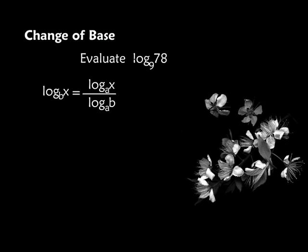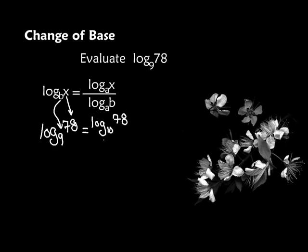Let's use the change of base formula to evaluate log base 9 of 78. Until you get really good at it, I would write the formula out and what we're trying to evaluate. So I'm going to write log base 9 of 78 right underneath my formula, so I can see that b is 9 and x is 78. To put it in our calculator, our base has to be 10, so we write log base 10 of 78 divided by log base 10 of 9. We don't need to write the 10s — log of 78 is already assumed to be base 10 — over log of 9.